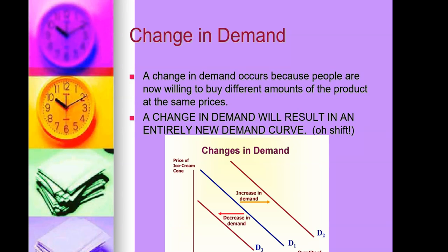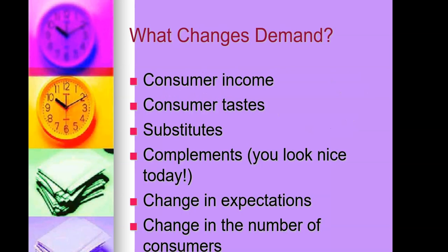You have the original line D1. If the ice cream store is selling a lot of ice creams, demand increases and it moves to the right — D2. If taxes went up on the ice cream seller and he raised prices, that demand decreases and the demand curve moves to the left — D3.